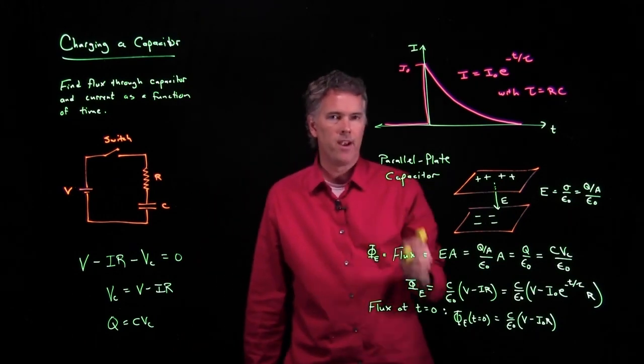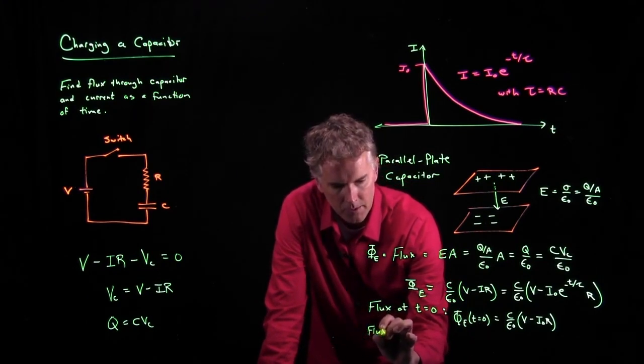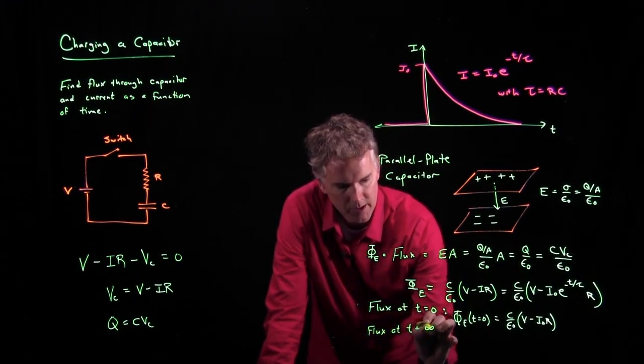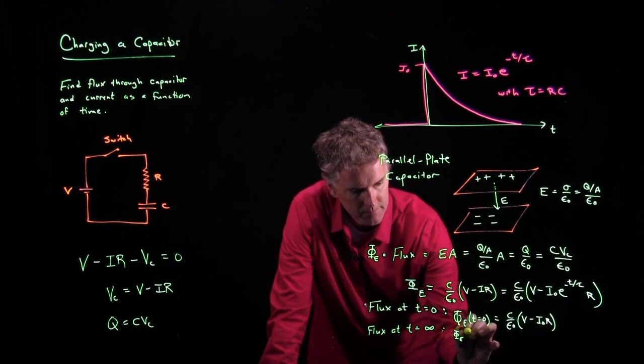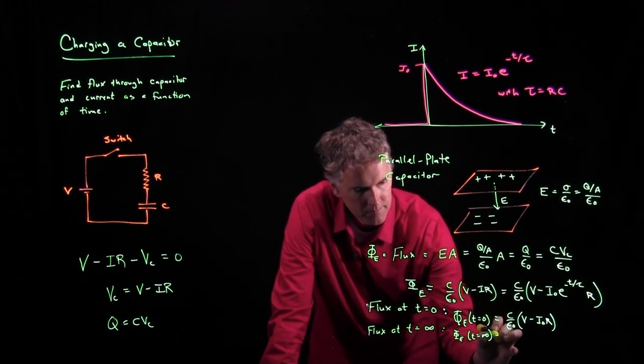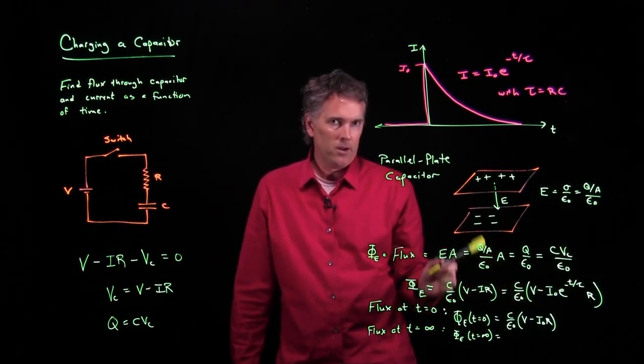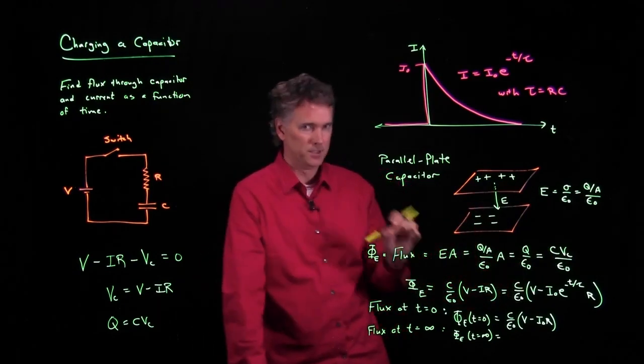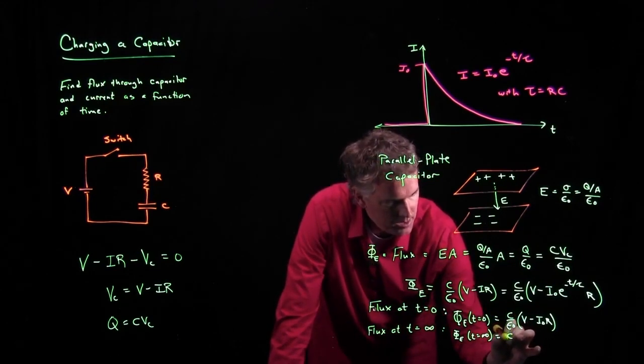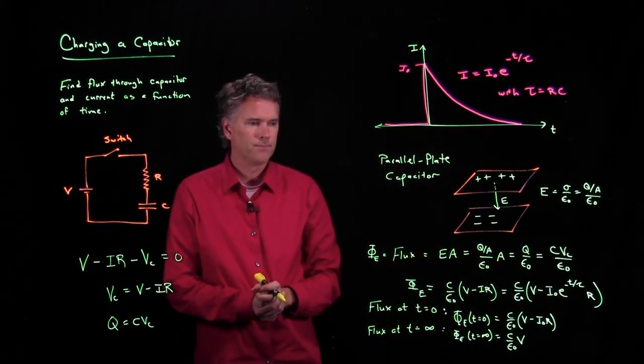What about at very long times? As time increases and we go to infinity, what is the flux? If I put in T equals infinity there, E to the minus infinity is equal to zero. And so we just get C over epsilon naught times V. All that other stuff goes away.